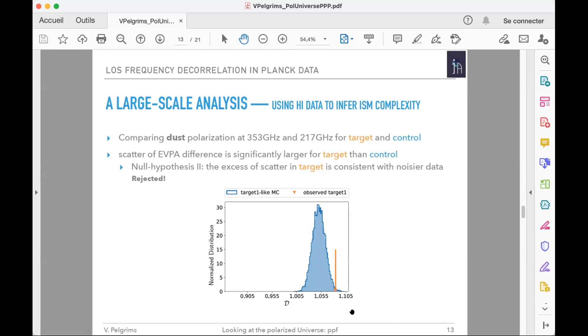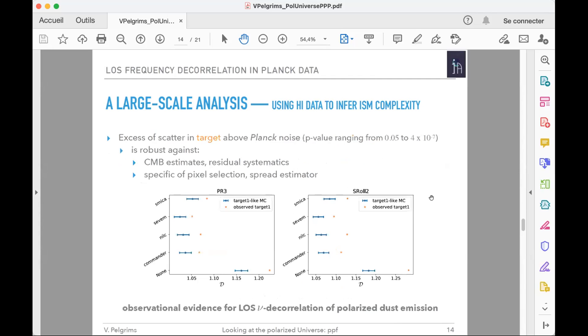To address this question, we produced mock samples from the control sample so that all mock samples have noise properties that match the noise properties found in the target sample. We did so and obtained this kind of plot where we can see that the null hypothesis, which says that the excess scatter in target is consistent with noise in data, needs to be rejected.